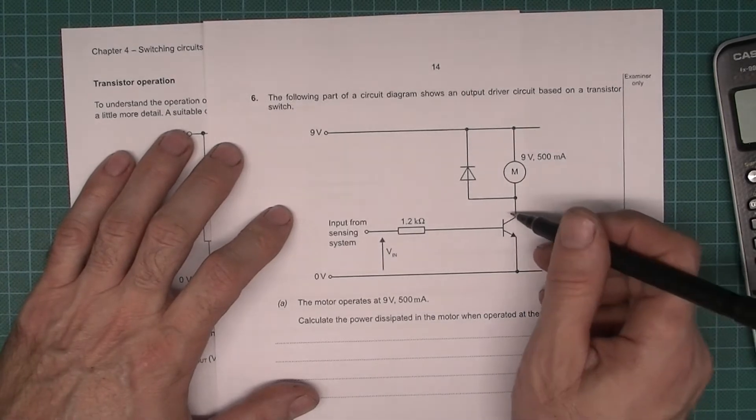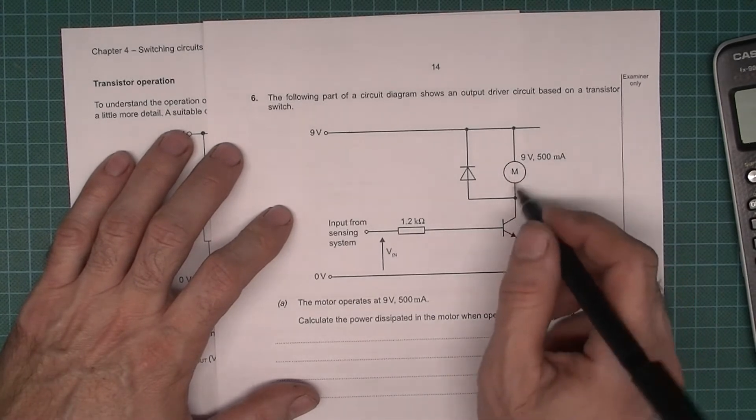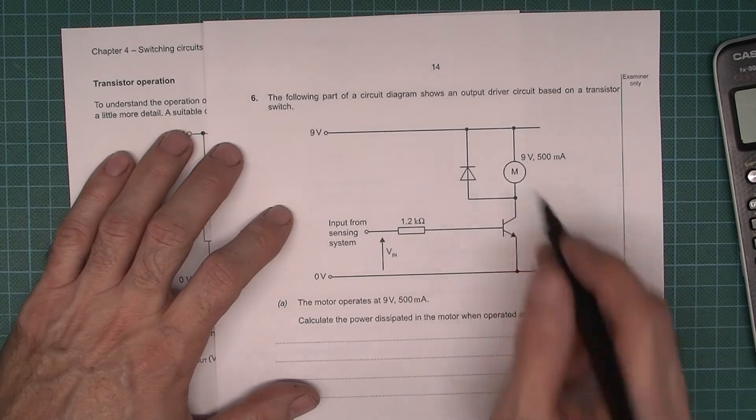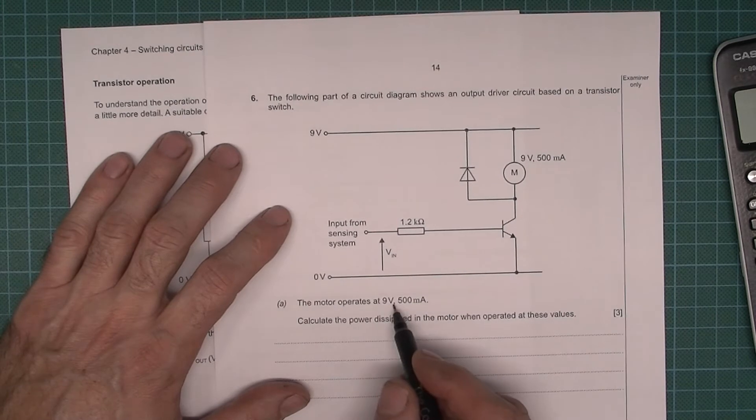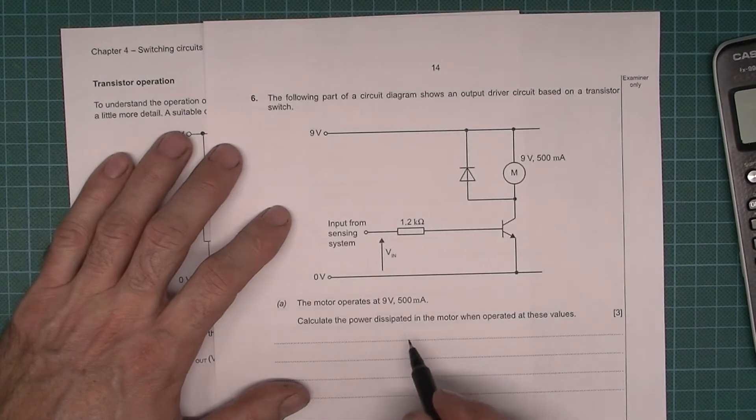Okay, so transistor being used as a switch to turn the motor on and off. We got this freewheeling or protection diode there. A resistor limiting the current into the base. The motor operates at 9 volts, 500 milliamps. Calculate the power.